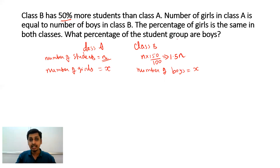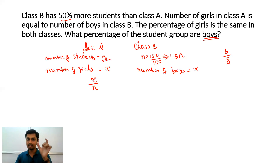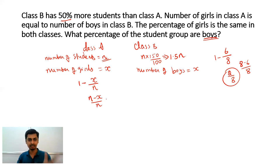Now we have to find what percentage of students in both classes are boys. Out of n students, x are girls, so the number of boys in class A is n minus x. For example, if out of 8 students, 6 are girls, then boys = 1 − (6/8) = 2/8. Similarly, the percentage of boys in class A is (n − x)/n × 100.